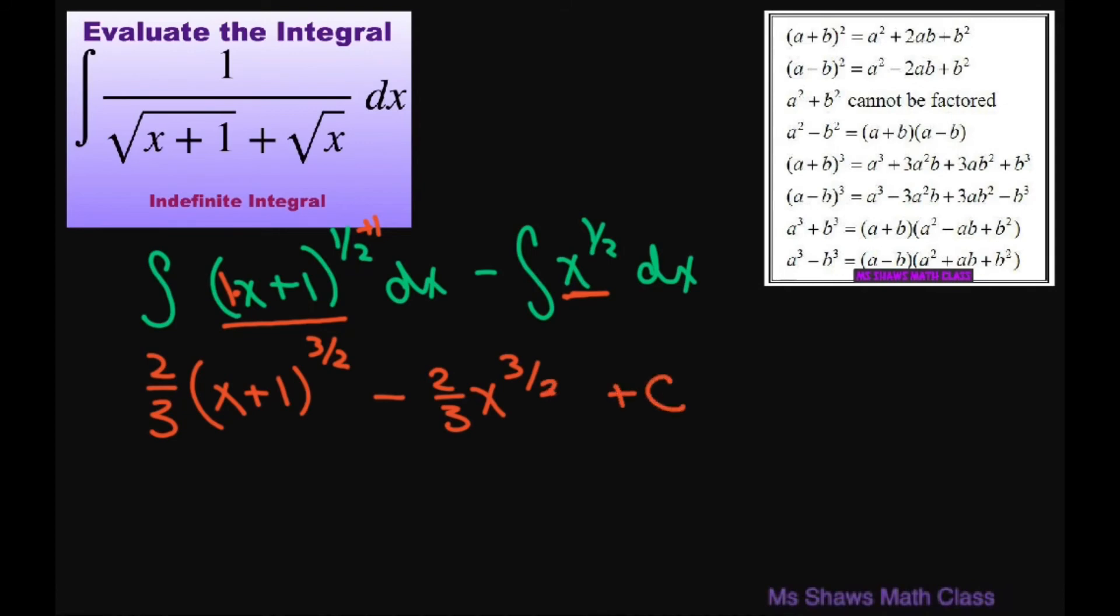And the only thing you can do different if you want, we can simplify this and write this as 2 thirds, and since we have 3 of these square roots, we can write it as x plus 1 times the square root of x plus 1 minus 2 thirds, and this one you can simplify as x times square root of x plus c.